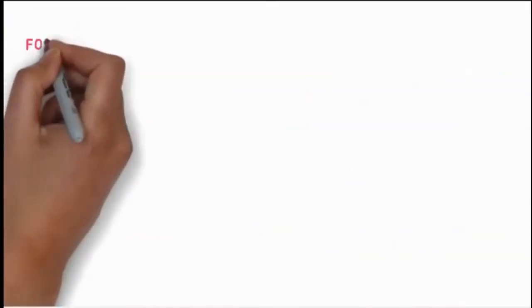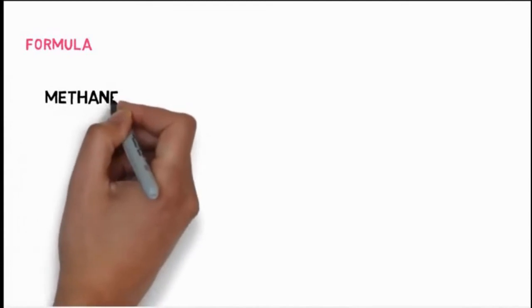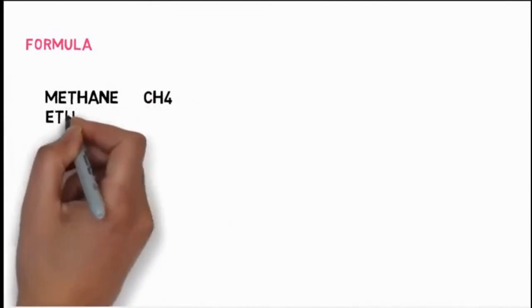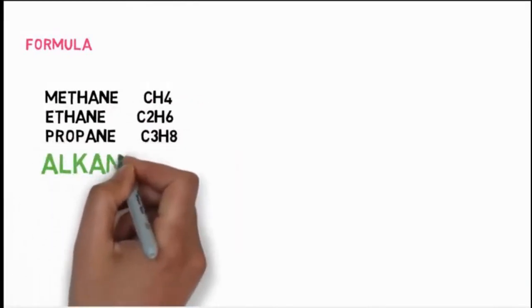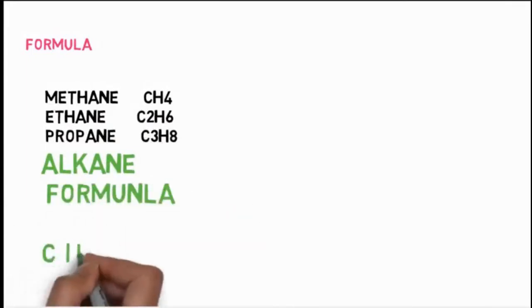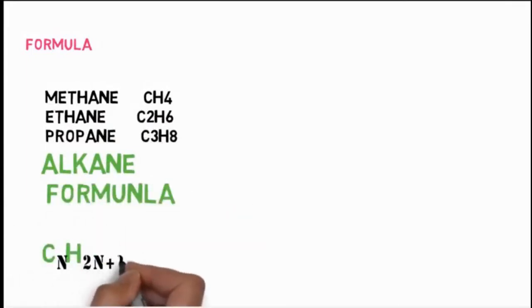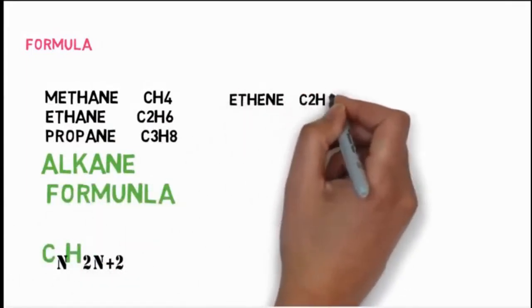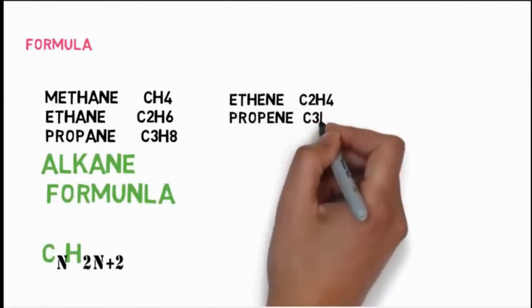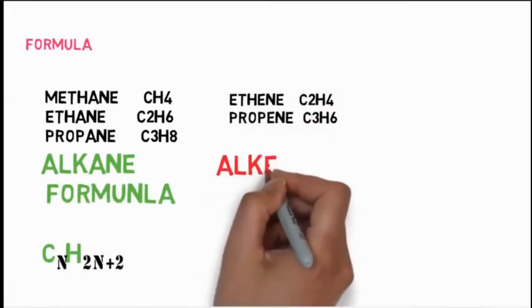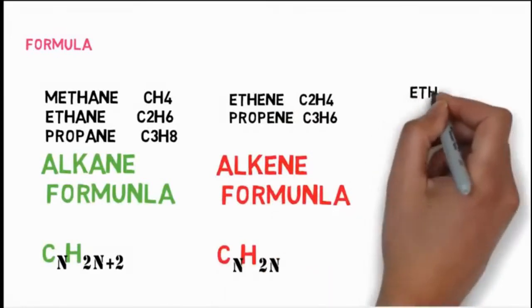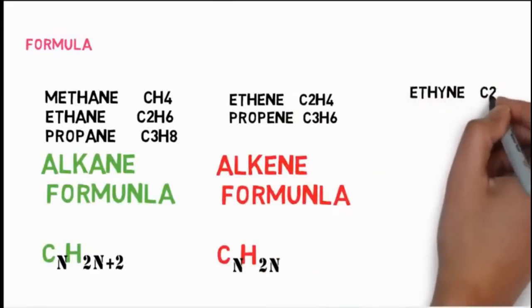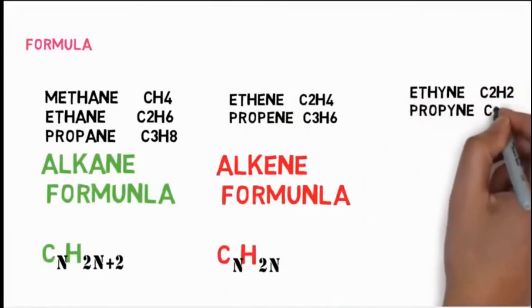Looking at the formulas, we find a common pattern: methane CH4, ethane C2H6, propane C3H8 — having a common alkane formula of CnH(2n+2). Ethene C2H4, propene C3H6 — having a common alkene formula of CnH2n. Ethyne C2H2, propyne C3H4 — having a common alkyne formula of CnH(2n-2).